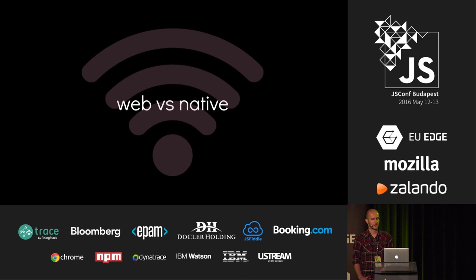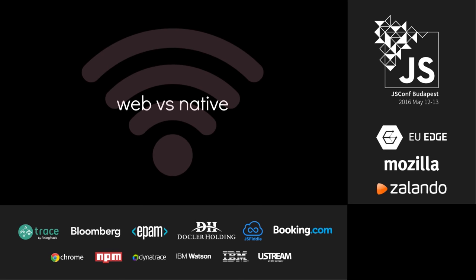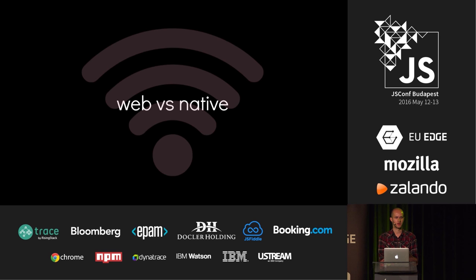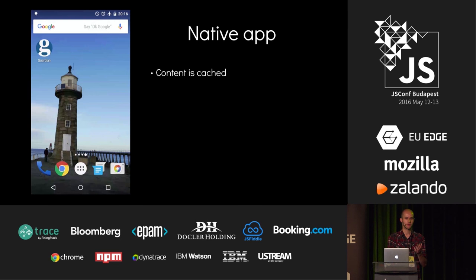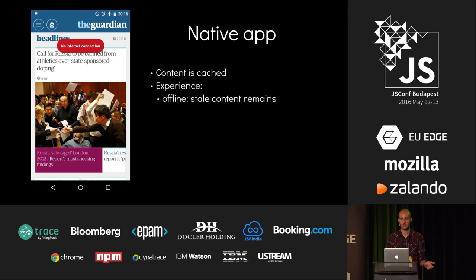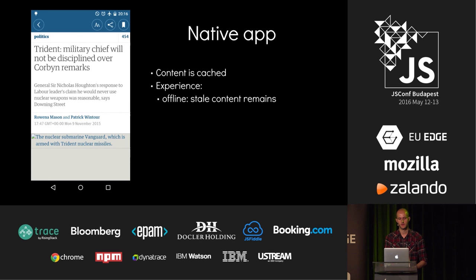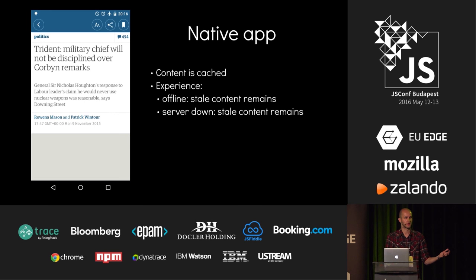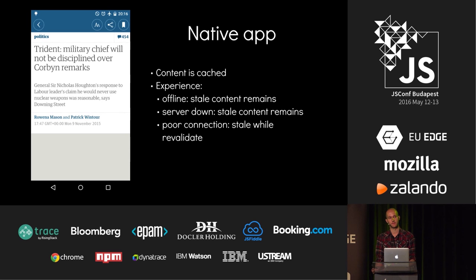I'm going to begin by comparing web and native and how these two different platforms compare when it comes to performance. In a native app, when you open it, it will download some content and cache it. So the next time you open it and you're offline, you just see the stale content. This is a Guardian app — I'm offline, but I can still see the homepage. I can actually navigate into content and I can still read it.